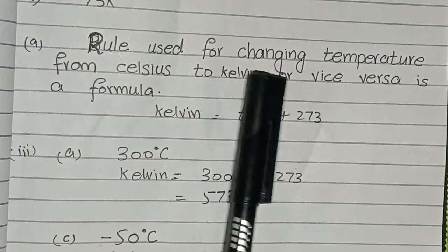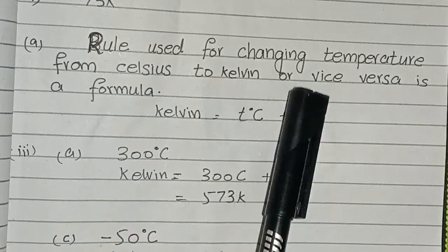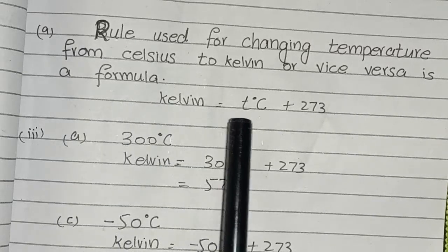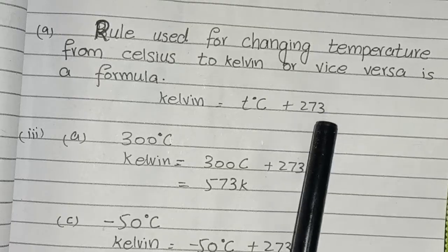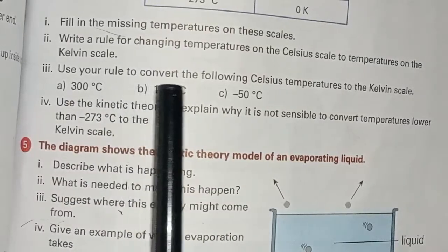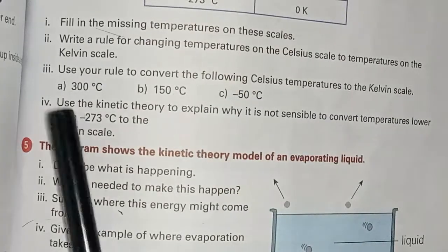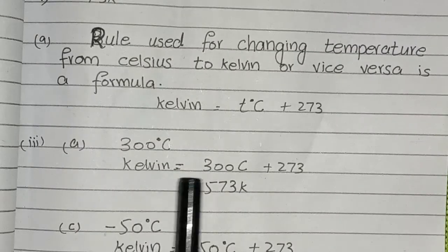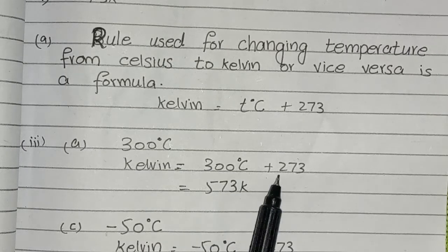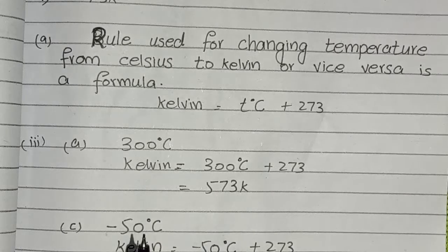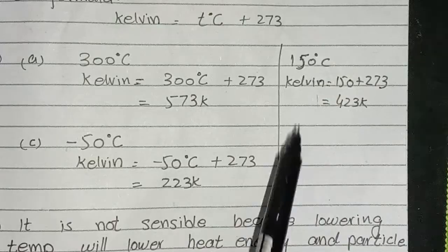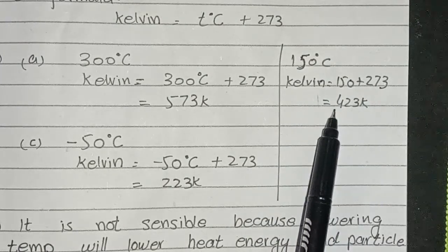You can write the rule used for changing temperature from Celsius to Kelvin and vice versa. Convert the following to the Kelvin scale: 300°C, 150°C, and minus 50°C. Kelvin = 300°C + 273, answer: 573 Kelvin. Kelvin = minus 50°C + 273, answer: 223 Kelvin. Kelvin = 150°C + 273, answer: 423 Kelvin.